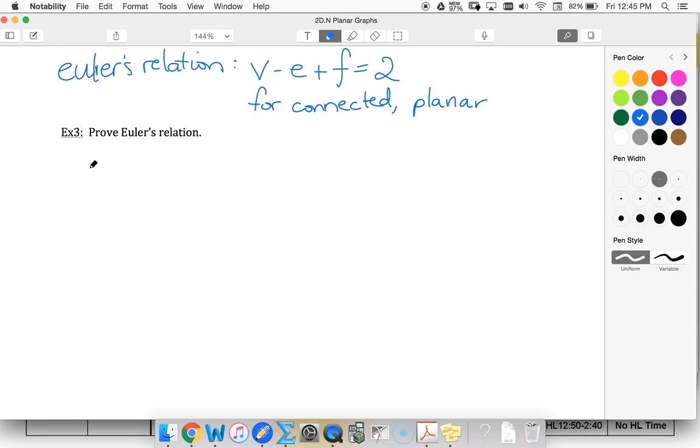Let's start with the most basic connected planar graph, which is just a single vertex. Number of vertices is 1, number of edges is 0, number of faces is 1. So this whole region, the whole plane. And so Euler's relation is true: V minus E plus F equals 2.